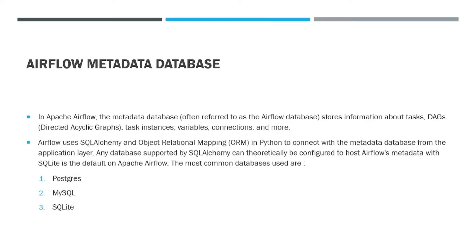Airflow uses SQLAlchemy — an object relational mapping (ORM) in Python — to connect with the metadata database. By default, SQLite is the default database that comes when you install Airflow for the first time. Other commonly used databases are Postgres and MySQL. Let's see where the database is being configured in Airflow.